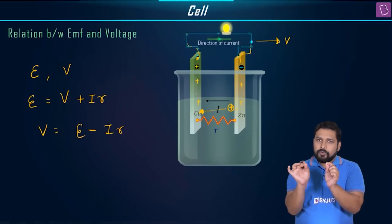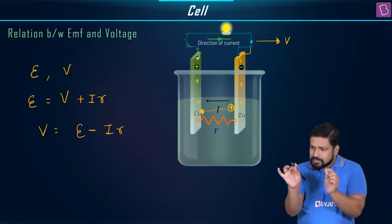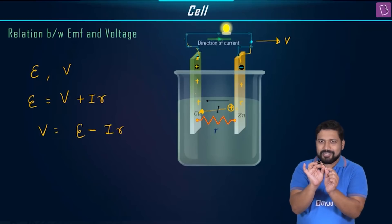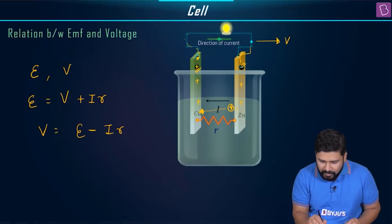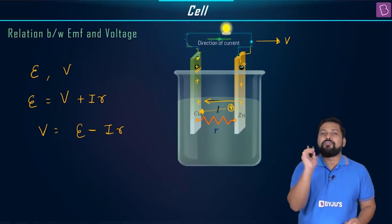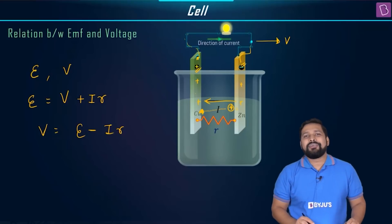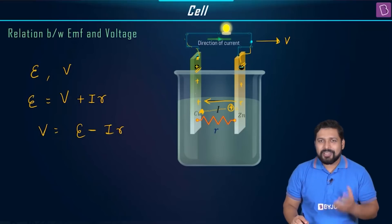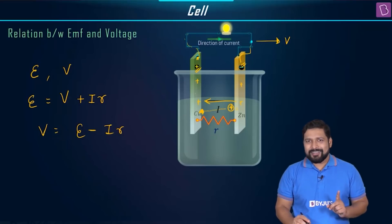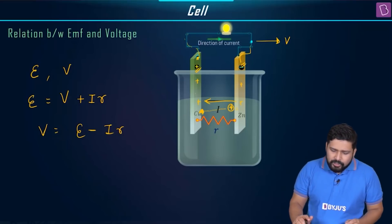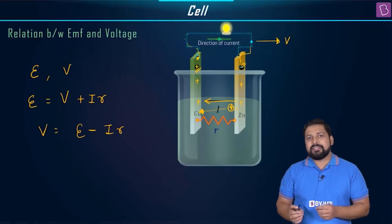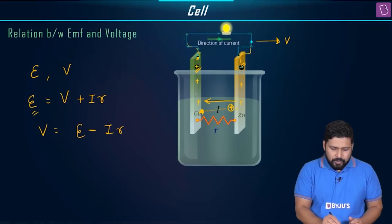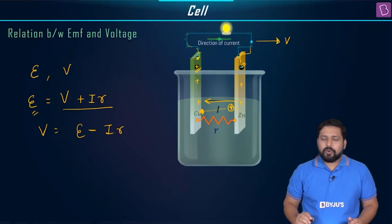So what will be the work done from here to here? It is V, and V + Ir will give you EMF. So V + Ir = EMF. You can write V = E − Ir, or equivalently E = V + Ir.